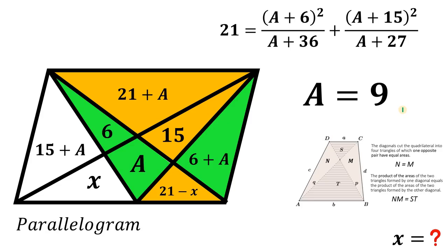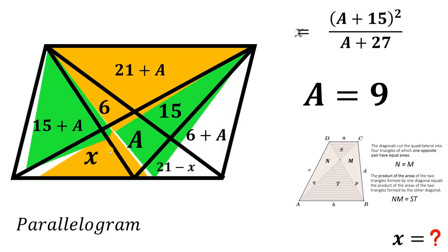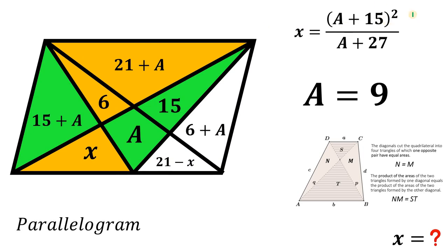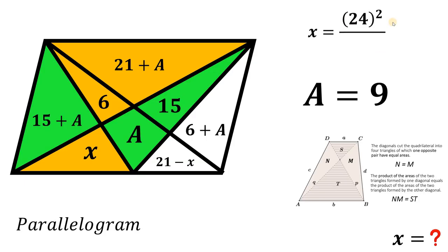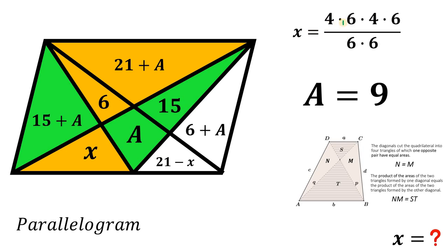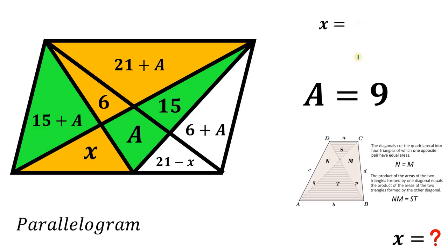Now we find x. From the earlier trapezoid result, x equals (a + 15) squared over (a + 27). Substituting a equals 9: x equals (9 + 15) squared over (9 + 27), which is 24 squared over 36. Since 24 squared equals 576 and 576 divided by 36 simplifies — 24 equals 4 times 6, so we cancel a factor of 6 from numerator and denominator — giving x equals 4 times 4 equals 16.